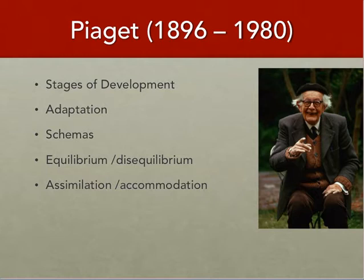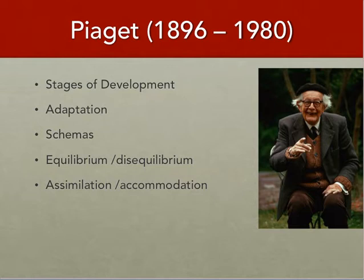Even if a child develops their dog schemata based on a German Shepherd at home, they can take those attributes and apply them elsewhere. Maybe at the park they see a poodle and ask the parent, 'dog?' — and the parent confirms yes, because it has four legs, it's barking, it has fur. That's how we group and cluster attributes to help make sense of our world.